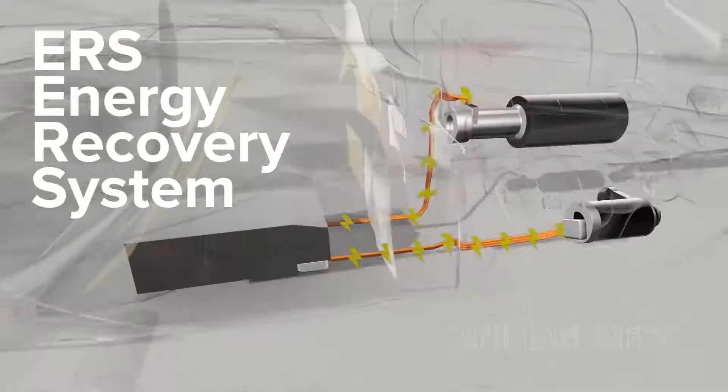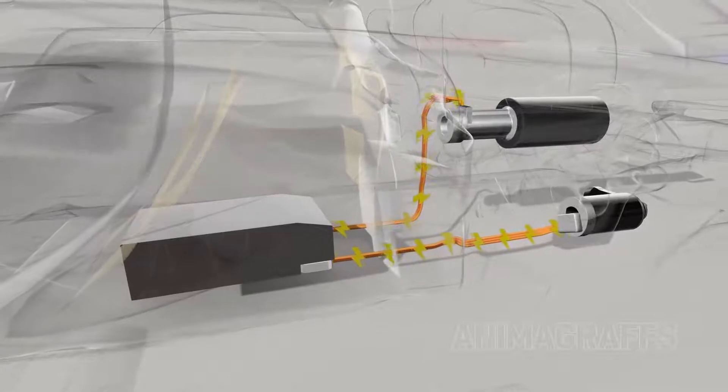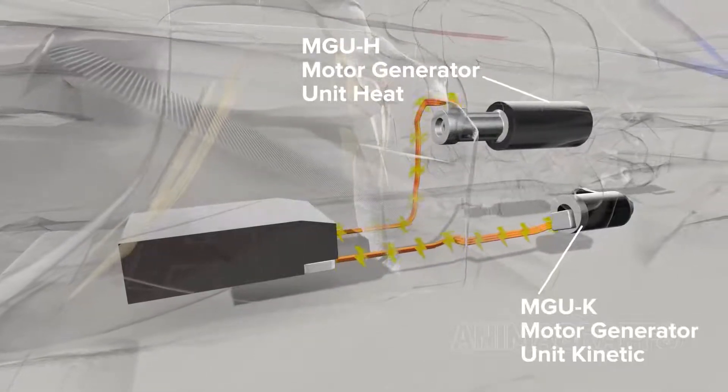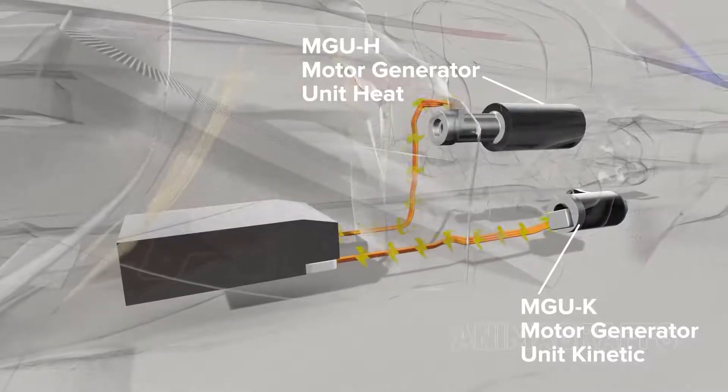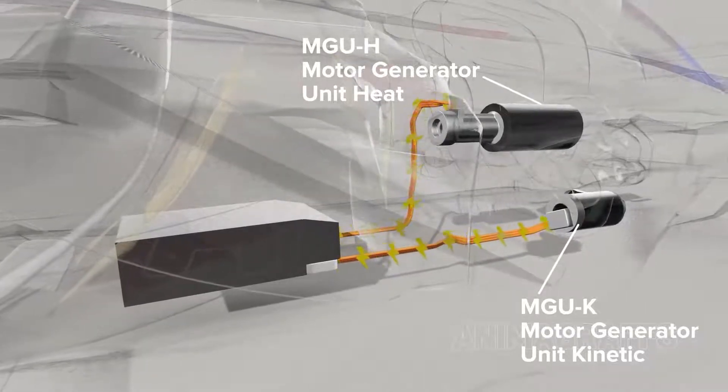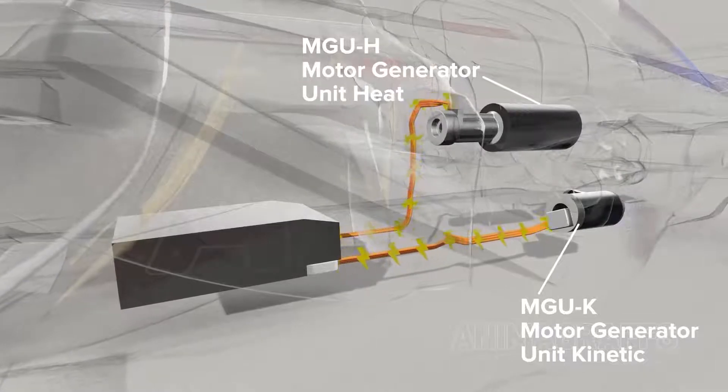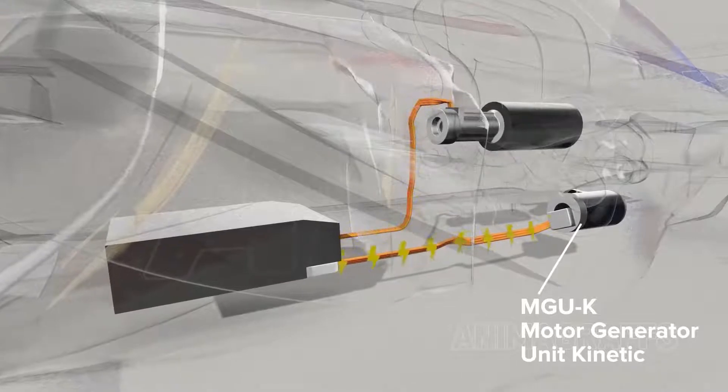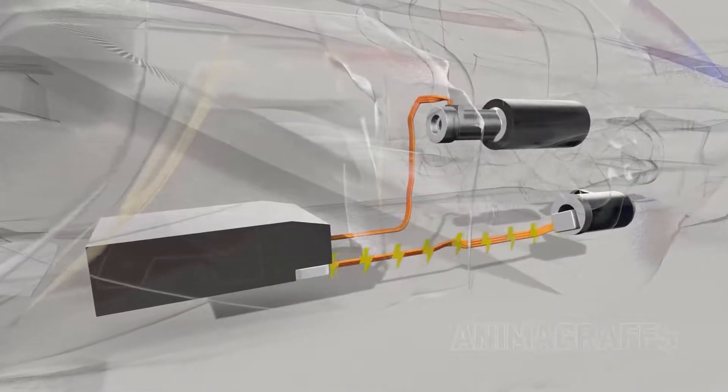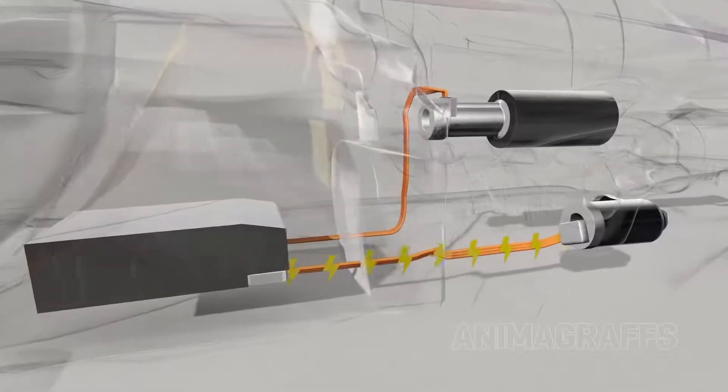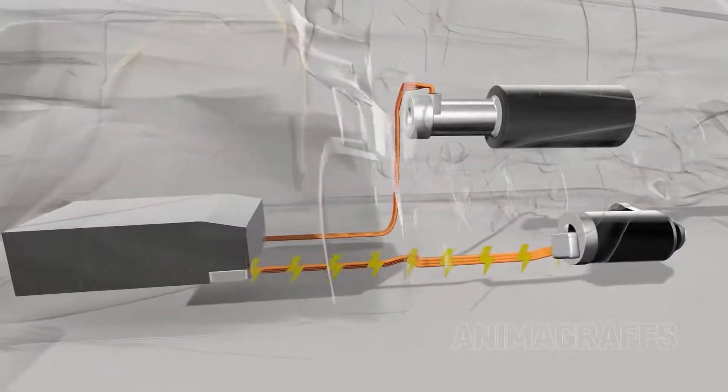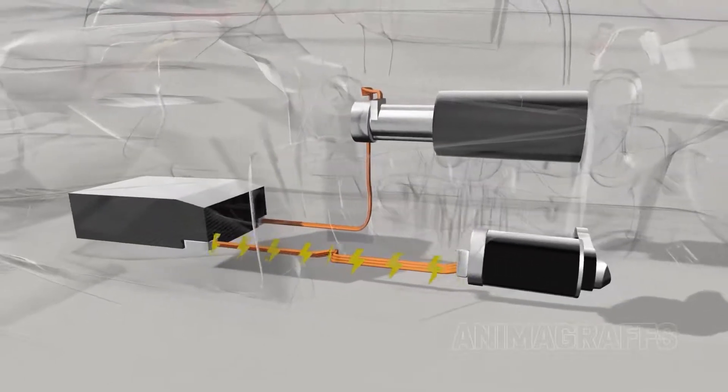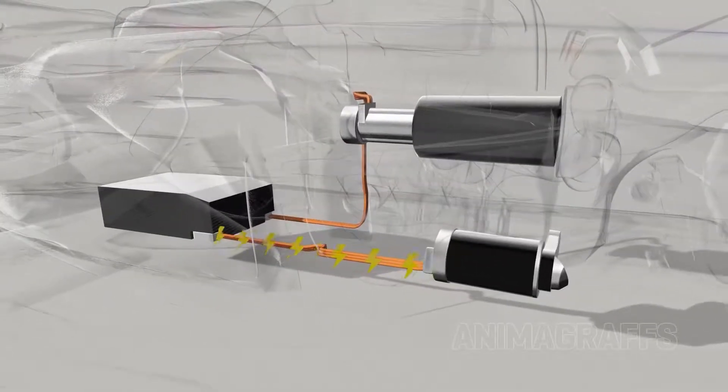The MGU-H and the previously shown MGU-K together make up the hybrid functionality of the modern F1 car. Both units generate electrical charge for the battery. Once sufficiently charged, the battery can send power back through the MGU-K unit which again is geared to the crankshaft. In this way the MGU-K can generate an additional maximum 160 horsepower or as much as a small separate car engine.